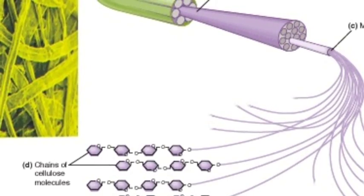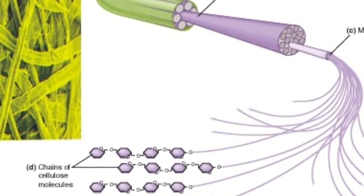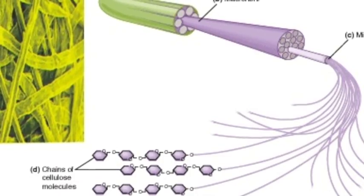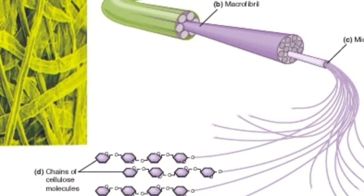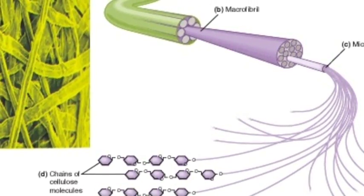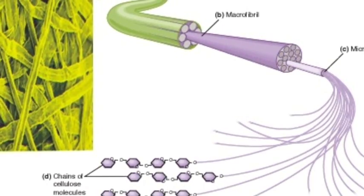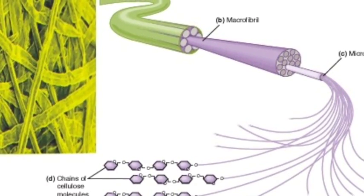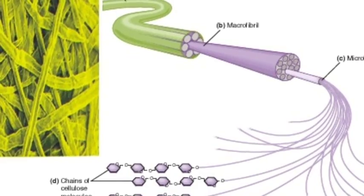Cellulose fibres form plant cell walls. Because the glucose monomers contain so many OH groups, many hydrogen bonds can form between them. About 60 to 70 cellulose molecules become cross-linked by hydrogen bonds. These form bundles called microfibrils.